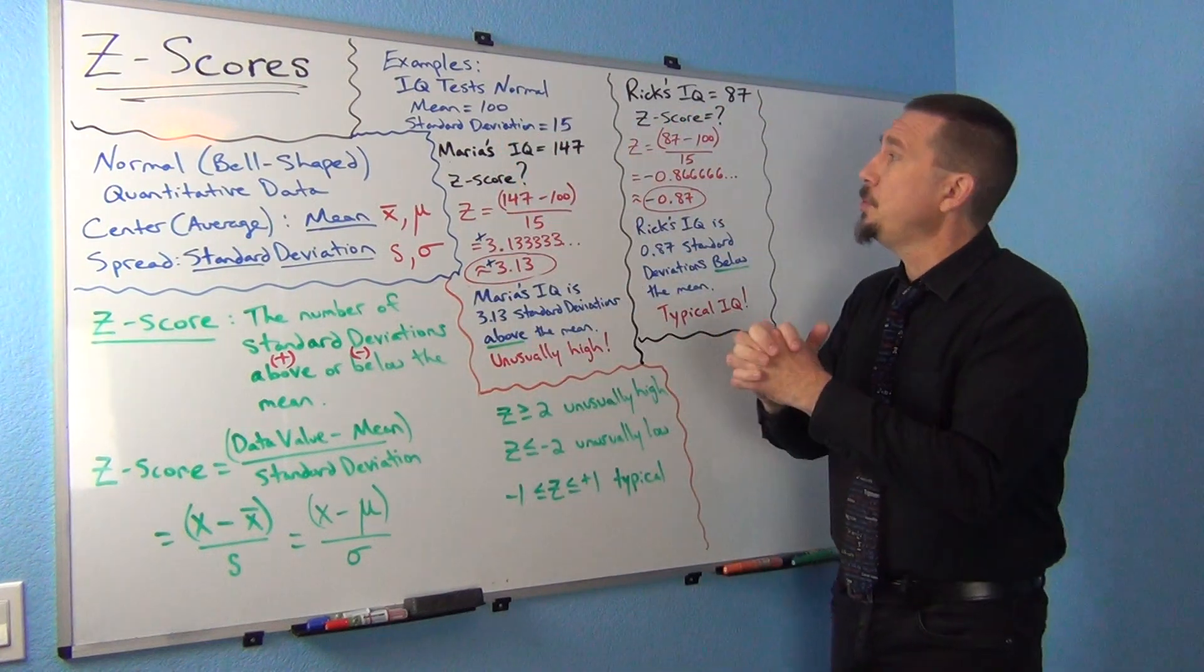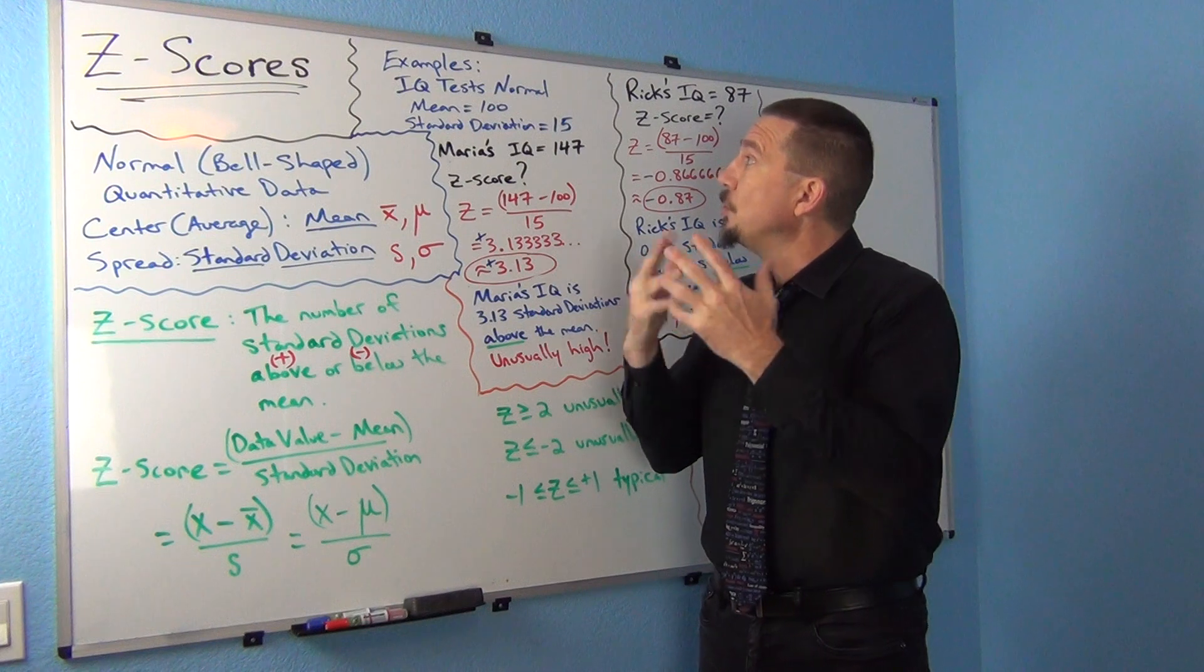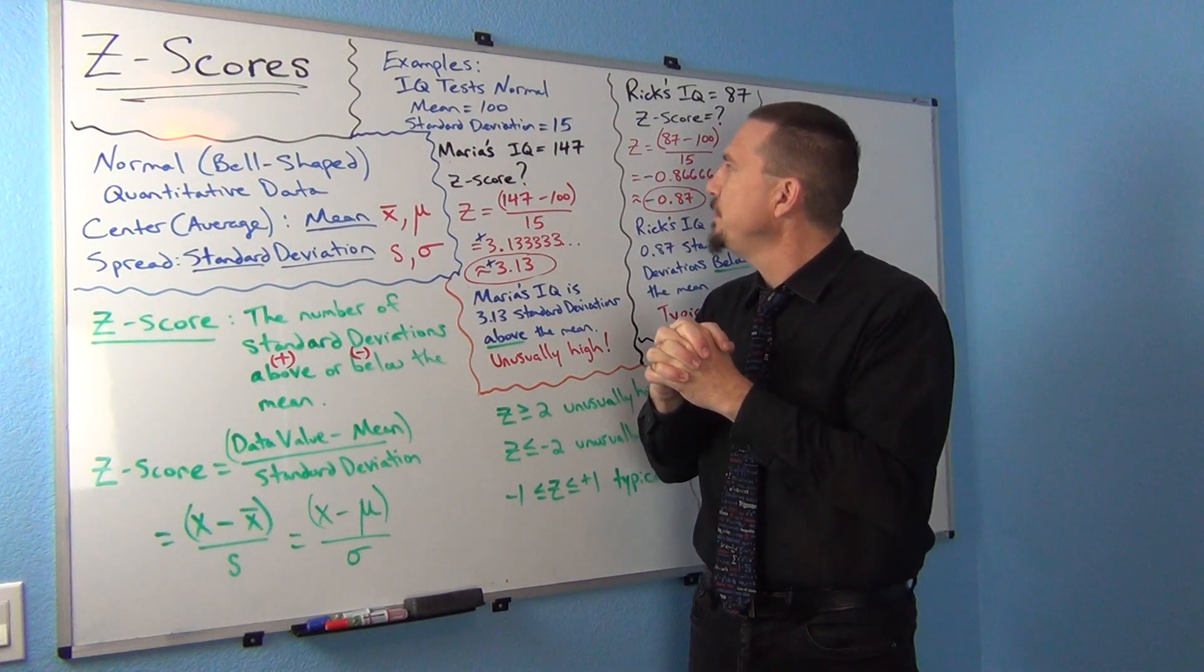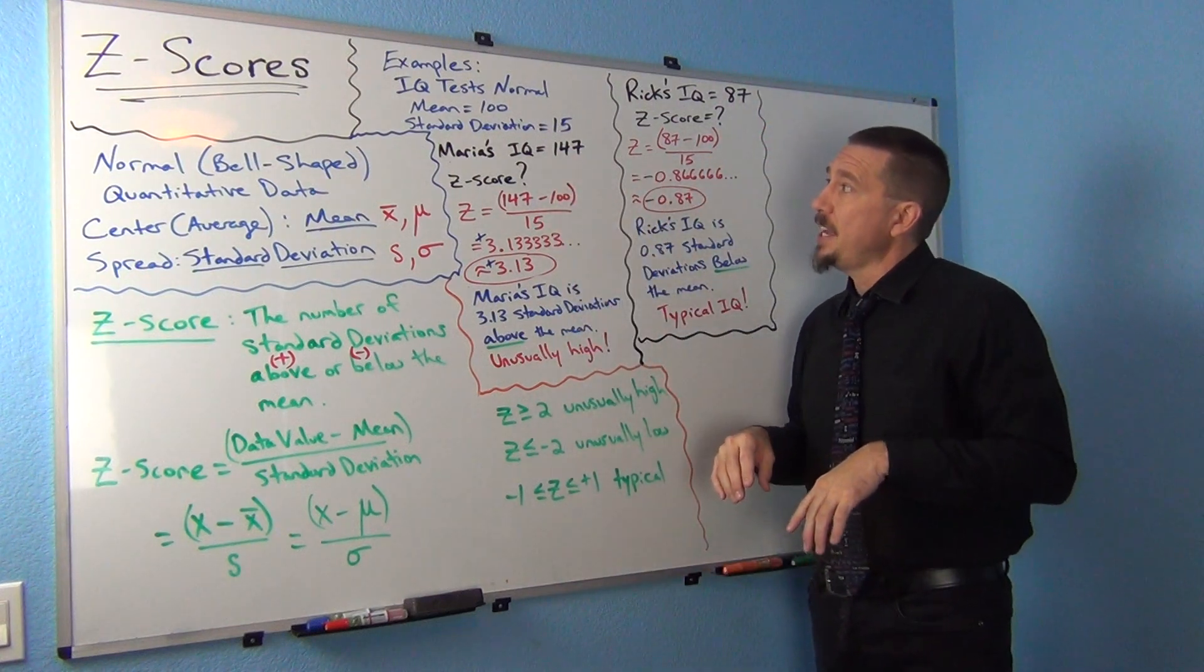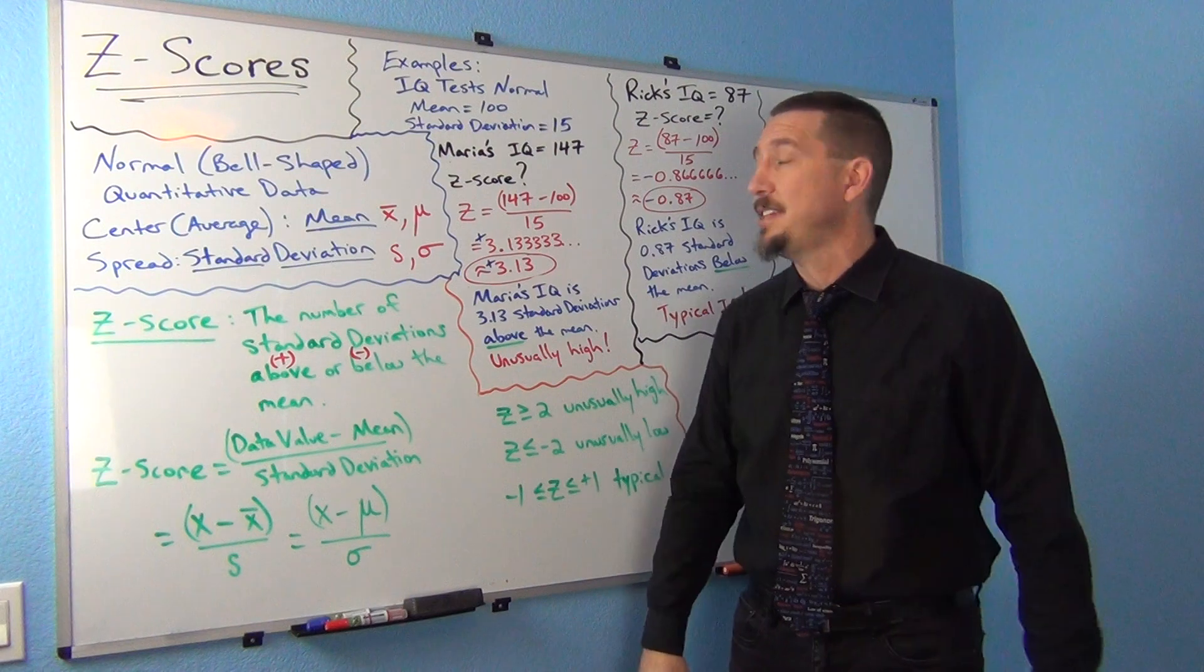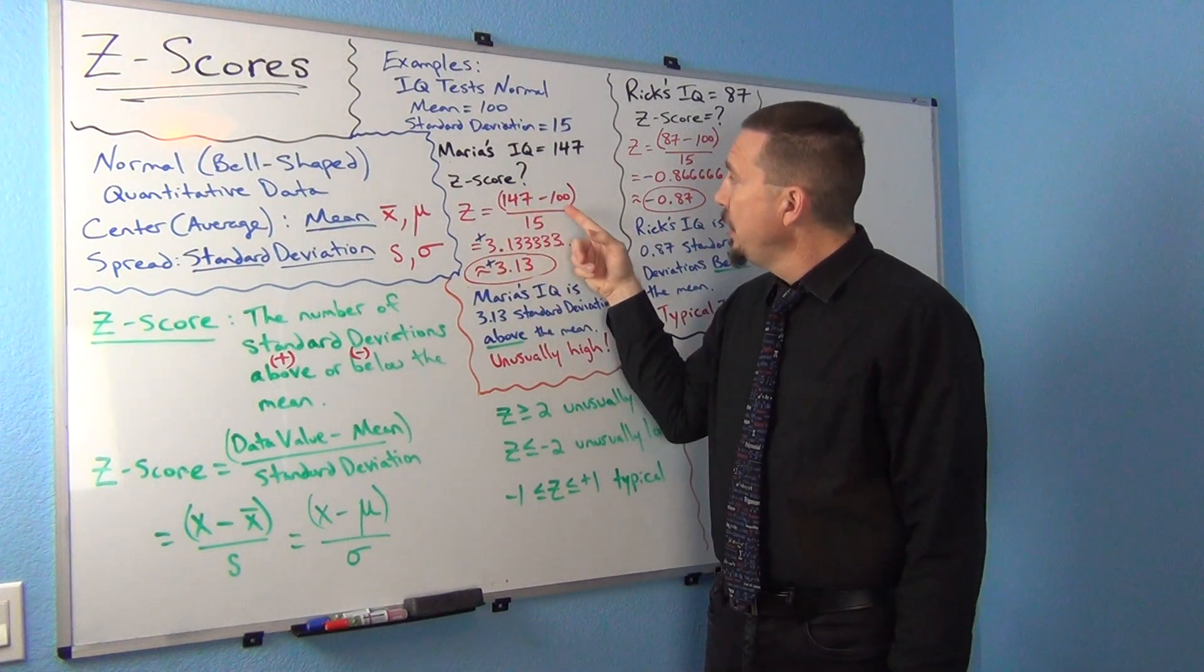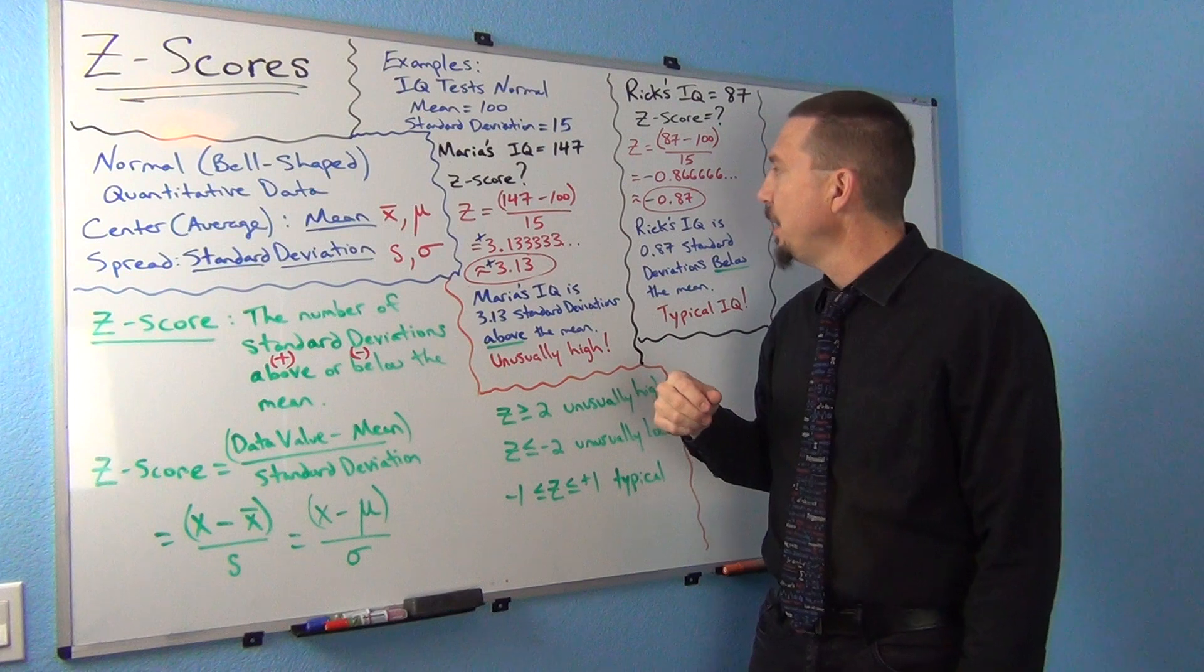So let's look at a couple quick examples. Let's suppose IQ tests are normally distributed or normal with a mean of 100 and a standard deviation of 15. So let's suppose we look at Maria's IQ and Maria's IQ came out to be 147. How does that compare to everybody else that takes an IQ test? Well, we could calculate the Z-score for Maria. So all you do is you put in Maria's score, 147, minus the mean, so minus 100, and then divide by 15.